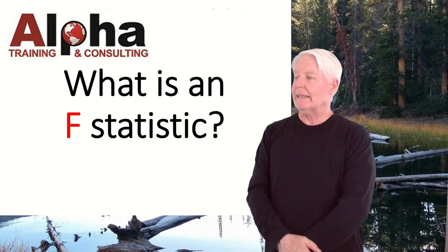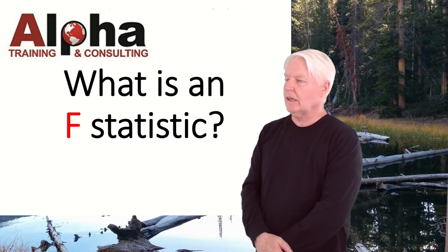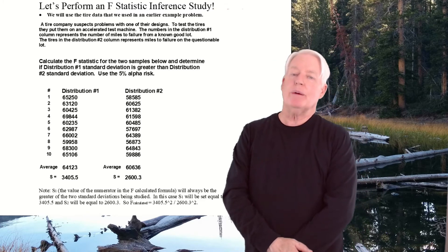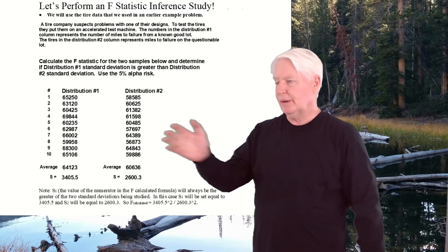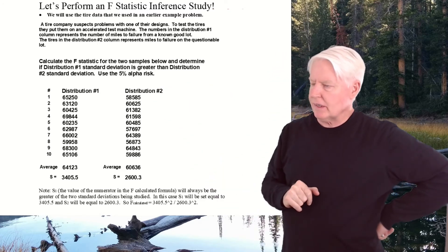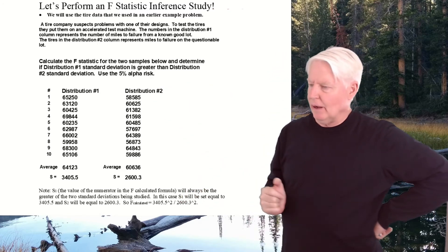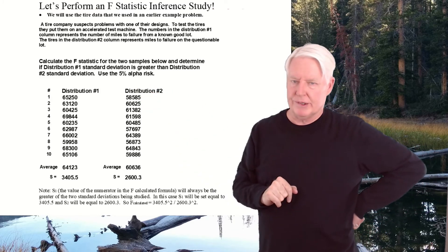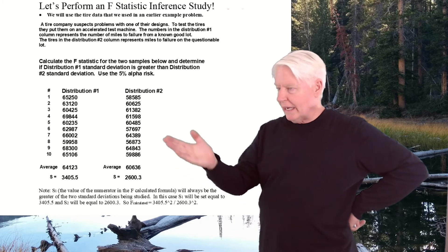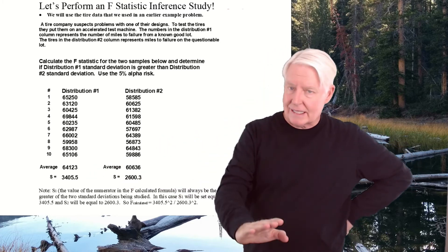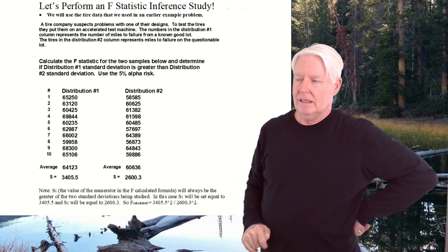Alright, here we are back at the PowerPoint. So let's talk a little bit more about this F statistic. So I already went to the computer and I put these numbers in. And of course, I have a 5% alpha risk. And I did the p-value. And the p-value came back way greater than 5%. So as a result, I can say the difference between these standard deviations is statistically insignificant.